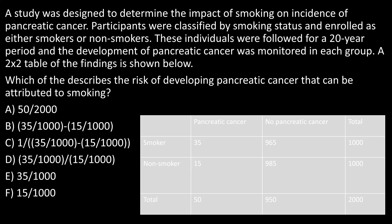Let's start with the simpler ones that have the least math — that'll help you move quickly if you're taking this question in real time. The first answer choice says 50 over 2000. If you look at the table, 50 is the total number of pancreatic cancer cases — incident cases in a cohort study — and 2000 is the total number of participants. So 50 incident pancreatic cancers over 2000 total participants gives you the overall incidence. That's not what they're asking — they want attributable risk — so we cross out answer choice A.